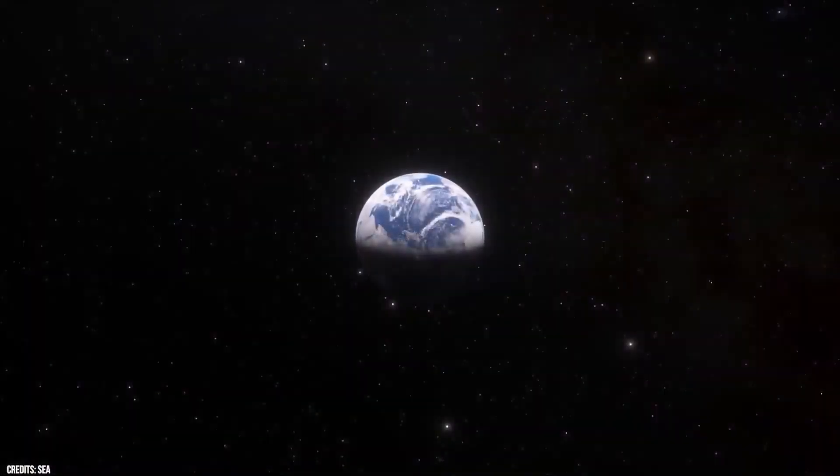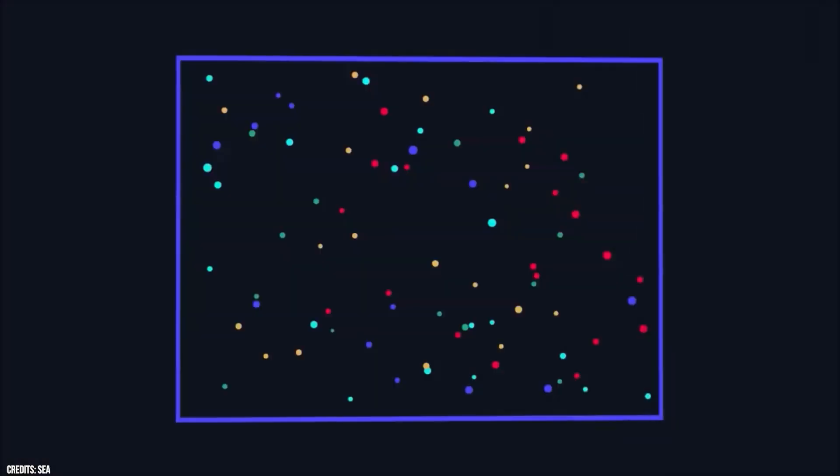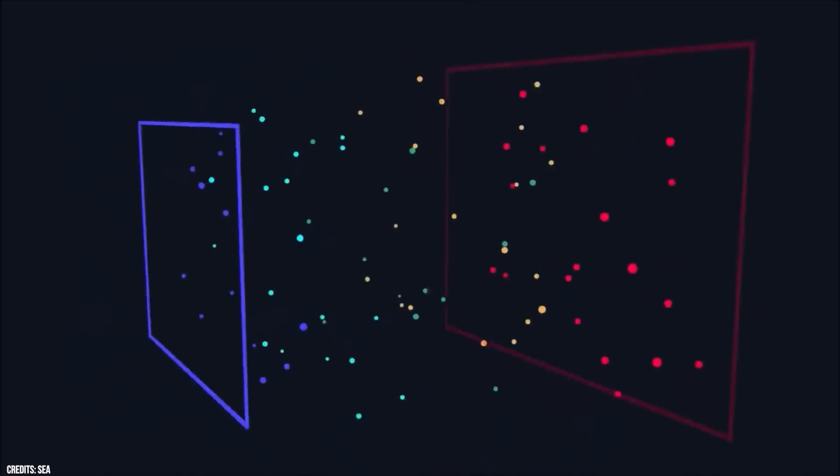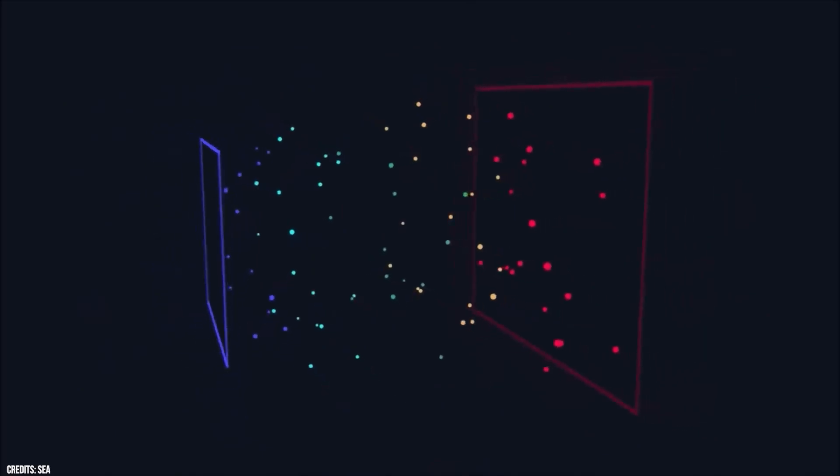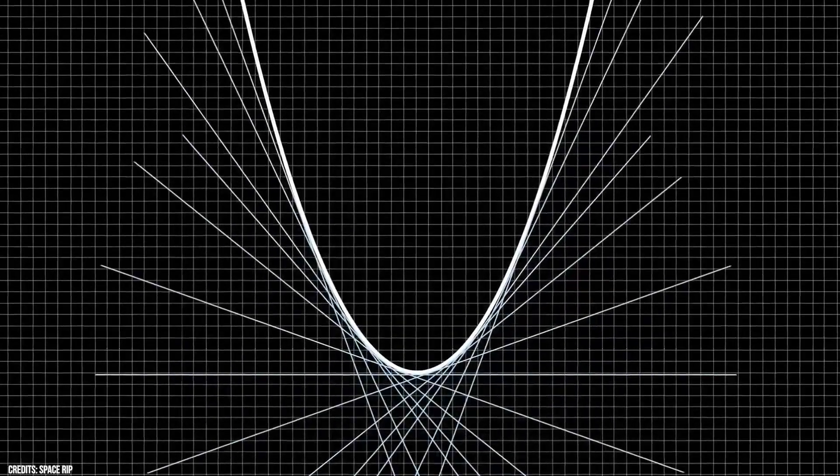To put these distances into perspective, consider the speed of light: 299,792 kilometers per second. The star Alphard in Hydra is about 177 light-years away, meaning a journey at light-speed would take 177 years. Alpha Centauri, 4.24 light-years away, would take over four years to reach at light-speed.